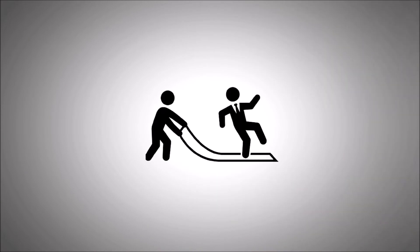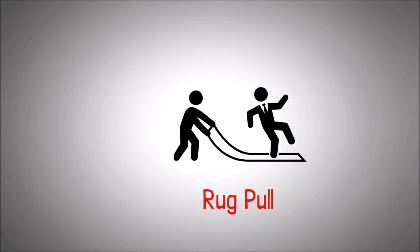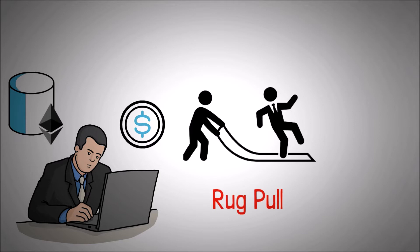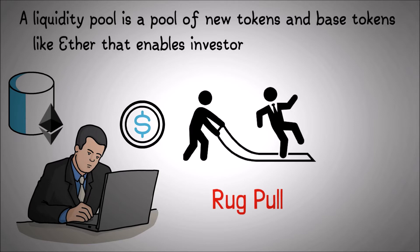One of the popular scams is rug pulls. It's a type of exit scam where perpetrators create a new token, launch a liquidity pool for it, and pair it with a base token like Ether. Simply put, a liquidity pool is a pool of new tokens and base tokens like Ether that enables investors to buy and sell the new token instantly.